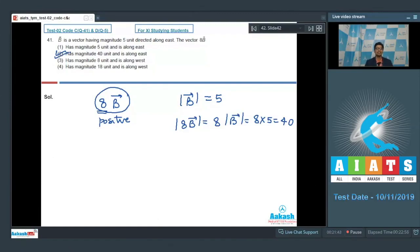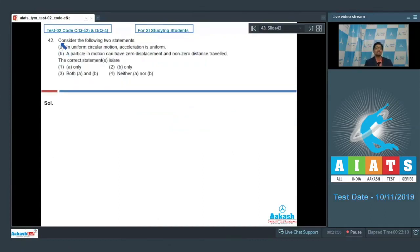Let us proceed to the next question, which is question number 42. Question number 42 says consider the following two statements. Statement A: In uniform circular motion, acceleration is uniform. Statement B: A particle in motion can have zero displacement and non-zero distance traveled. The correct statement is: